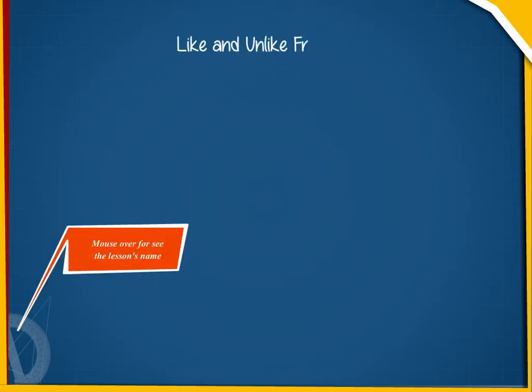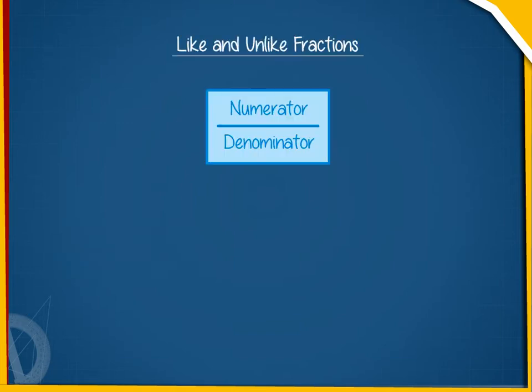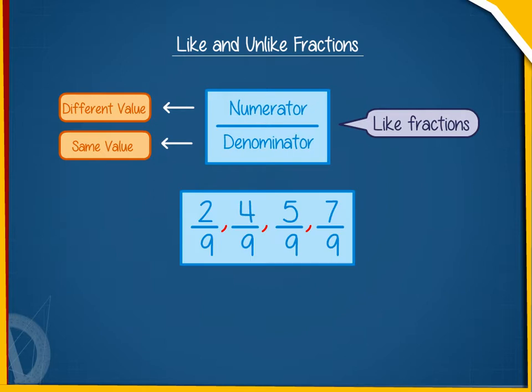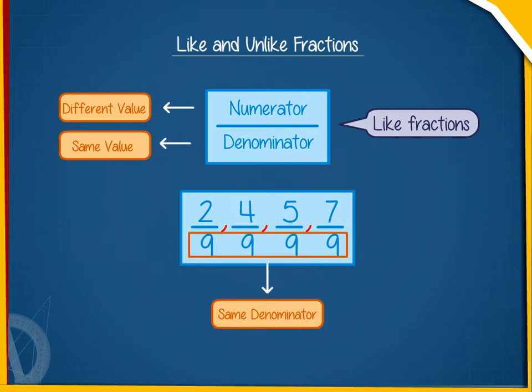Like and unlike fractions. When in a group of fractions, the numerators are different but the denominator is the same, the fractions are called like fractions. For example, 2 by 9, 4 by 9, 5 by 9, and 7 by 9 are like fractions because each fraction has the same denominator, that is 9.